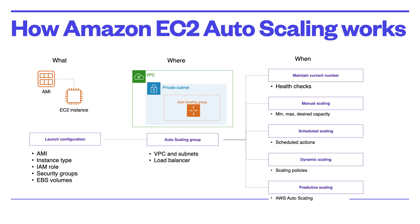You specify when you want scaling events to happen. Options include maintaining the current instance level at all times, manual scaling by specifying changes in minimum, maximum, and desired capacity, or scheduling scaling actions to automatically perform based on date and time. You can also use dynamic on-demand scaling — a more advanced approach — to define parameters controlling the scaling process. For example, you can check CPU utilization and scale out by adding EC2 instances when it reaches 60%, and scale in by terminating instances when it falls below 20%.